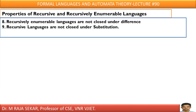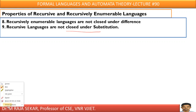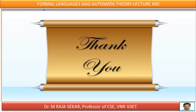Recursively enumerable languages are not closed under difference. If L1 and L2 are recursively enumerable languages, then L1 minus L2 is not necessarily a recursively enumerable language. Recursive languages are not closed under substitution. These are the different properties of recursive languages as well as recursively enumerable languages. Just go through the theory — you need not worry about proofs of these properties. Just have an idea of how they work; that is enough at this stage. Thank you very much.